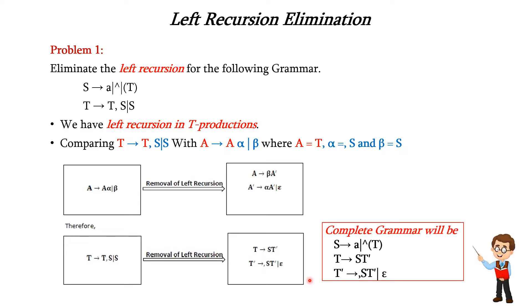The grammar after removal of left recursion is: the first production is taken as it is, and instead of the second production we rewrite it as two rules — T → S T' and T' → , S T' | epsilon. Thus we have removed the left recursion from the given grammar.